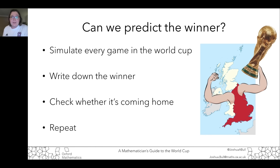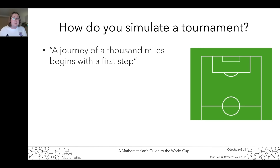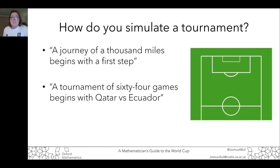And assuming that it is coming home, I'll repeat this process many, many times. The key thing is we don't just do this once, because this is a very noisy game — anything can happen in football. But if we do this 10,000 or 100,000 times, and we start to see the same team coming out on top, then maybe we can say yes, definitely going to be England. As a wise man once said, a journey of a thousand miles begins with a first step — and a tournament of 64 games begins with Qatar versus Ecuador.